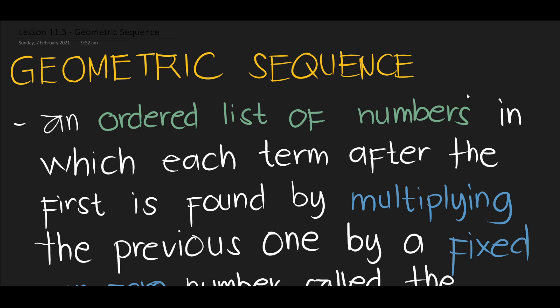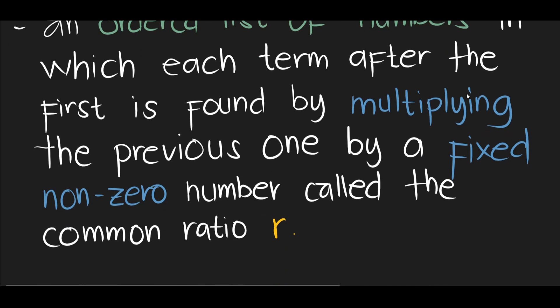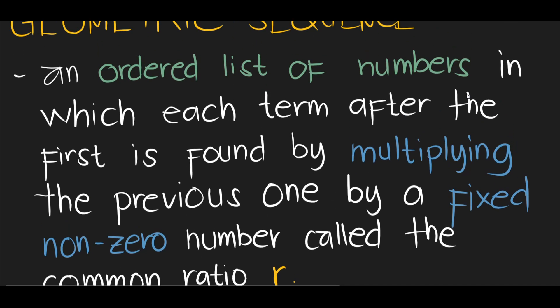To start with the definition, a geometric sequence is an ordered list of numbers in which each term after the first is found by multiplying the previous one by a fixed non-zero number called the common ratio. Based on the definition, what can we say about the difference between an arithmetic sequence and a geometric sequence?